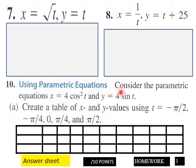Using parametric equations, consider the parametric equation x equals 4 cosine squared t and y equals 4 sine t. Part a: create a table of x and y values using t equals negative pi over 2 and then these values here.